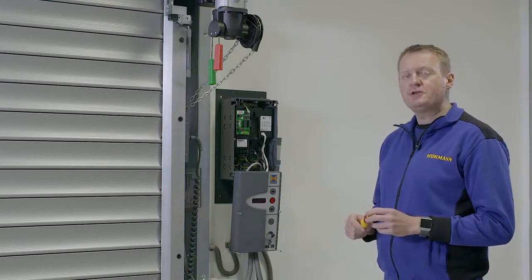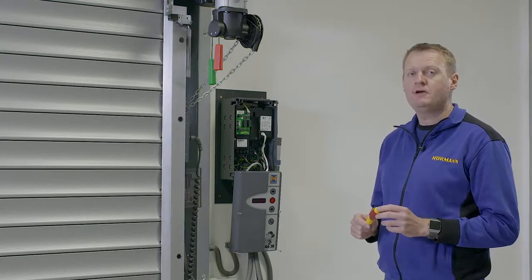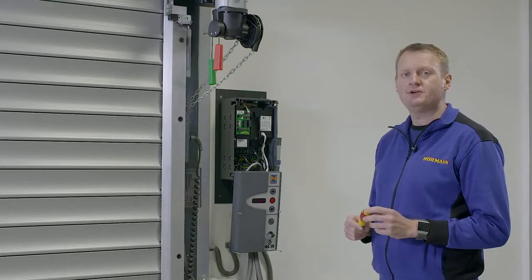Whenever the control panel does something or doesn't do something it will give you a code. For example, 51 for door open, 50 for stop, and 52 for door close.